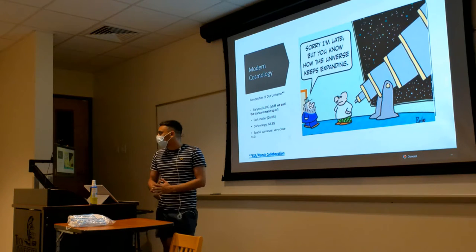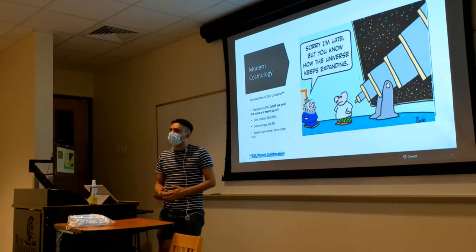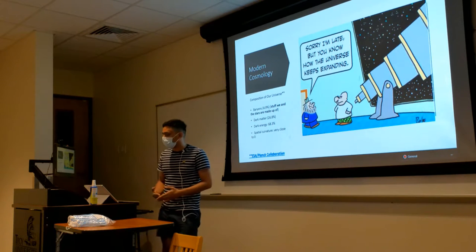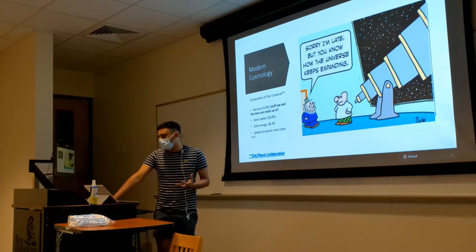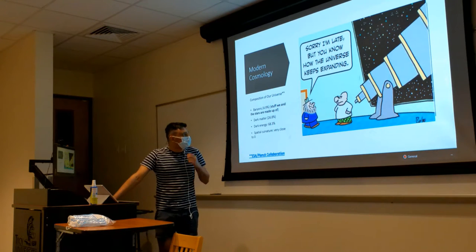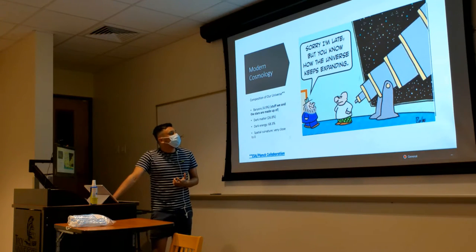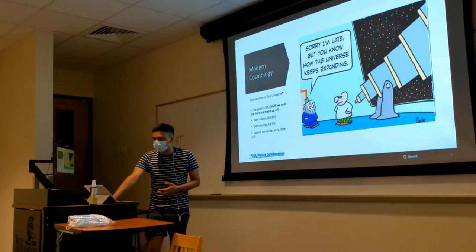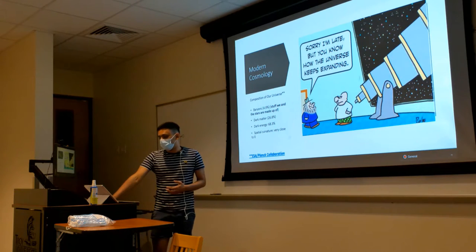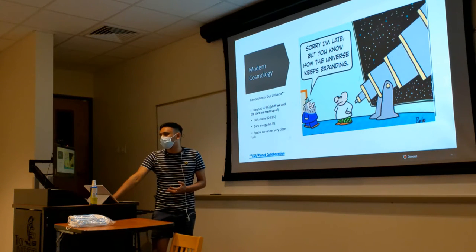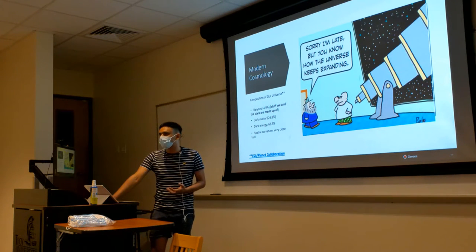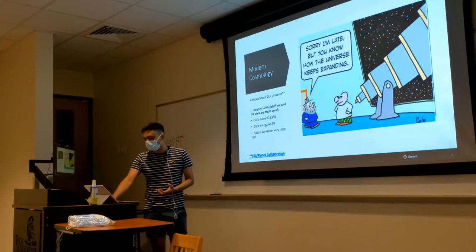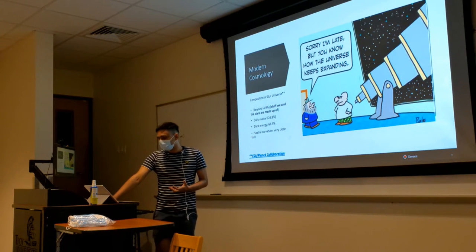In modern cosmology we have the standard model of cosmology, also called the lambda CDM model or the concordance model. It is specified by certain variables. Lambda stands for the cosmological constant, which represents dark energy — an entity that is not very well understood. We know it in its effect: it is accelerating the expansion of the universe. The universe is expanding, and recent research has shown that the rate of expansion is accelerating.